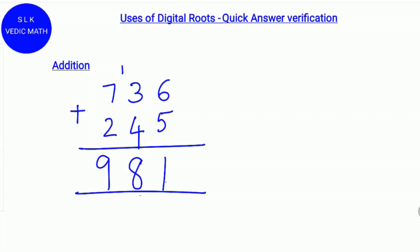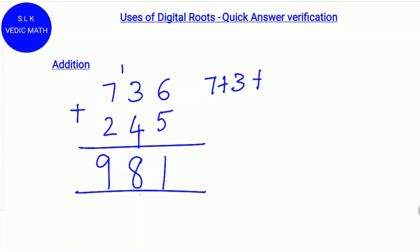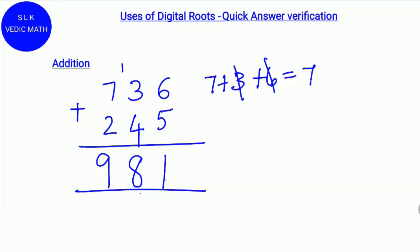Next, find the digital root for this number. So 7 plus 3 plus 6. Cross out 3 and 6 because they add up to 9. Next, add the remaining digits. So 7. The digital root of 736 is 7.